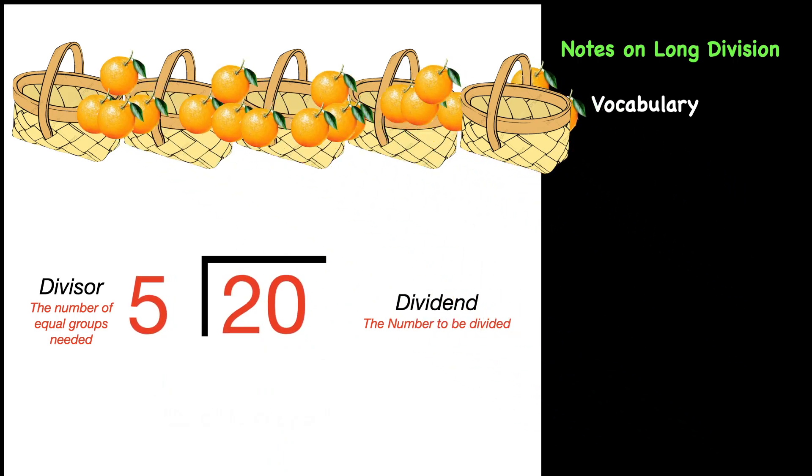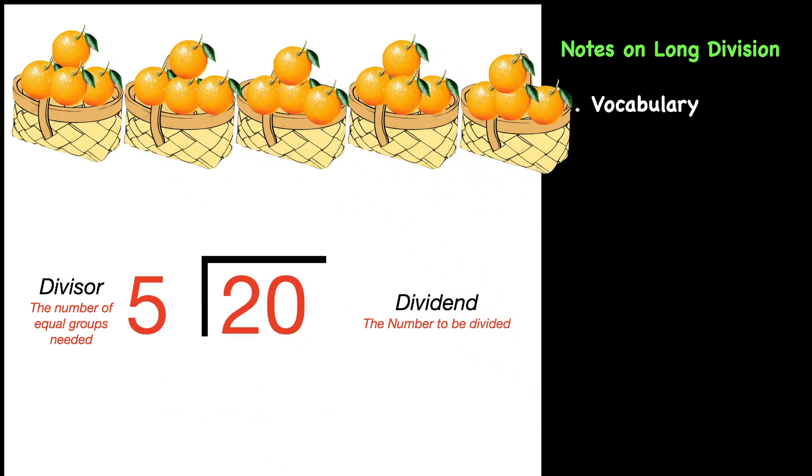Next, we're going to separate the oranges equally, and we would get four oranges per basket. That four becomes the quotient. The quotient is the answer and it goes on top of the bracket and shows how many are in each group. We would read this problem as 20 divided by 5 equals 4.